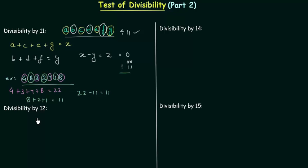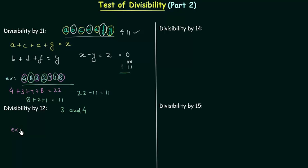Now we will move to divisibility by 12. A number is said to be divisible by 12 if it is divisible by both 3 and 4. If a number is divisible by 3 and 4, then it is divisible by 12. Let's take one example.